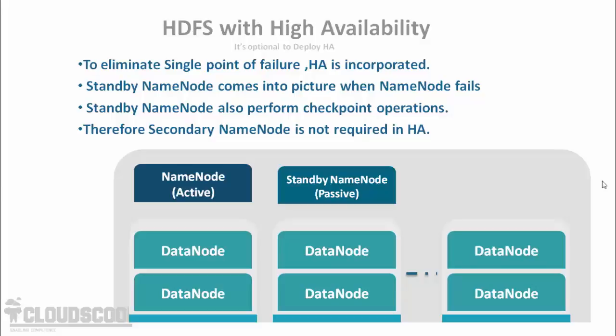As you can see on the screen, the secondary name node is not required in an HA configuration, because the standby name node performs the checkpoint operation.